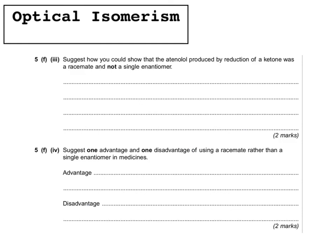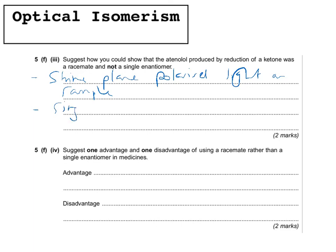Finally, another question: suggest how you could show that the atenolol produced by reduction of a ketone is a racemate and not a single enantiomer. Again, you shine plane polarised light on the sample. A single enantiomer would rotate the light, whereas a racemate would leave the plane polarised light unaffected.